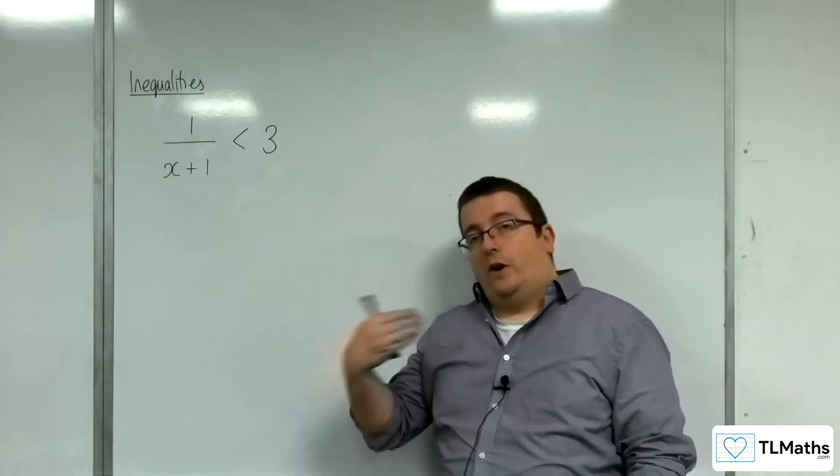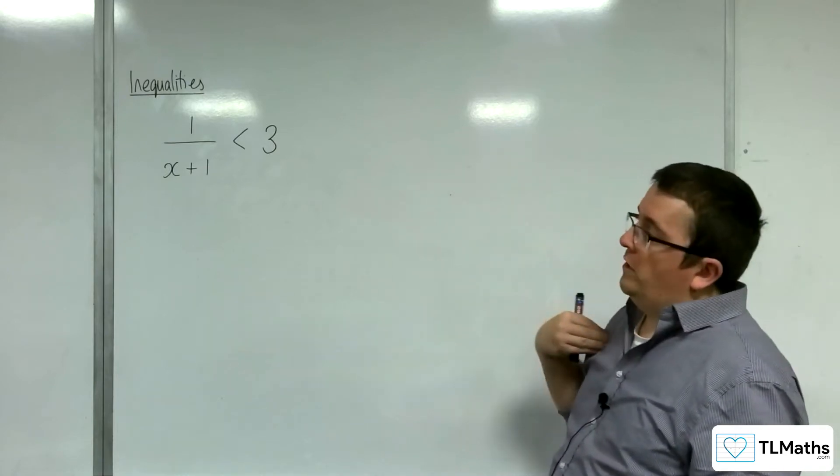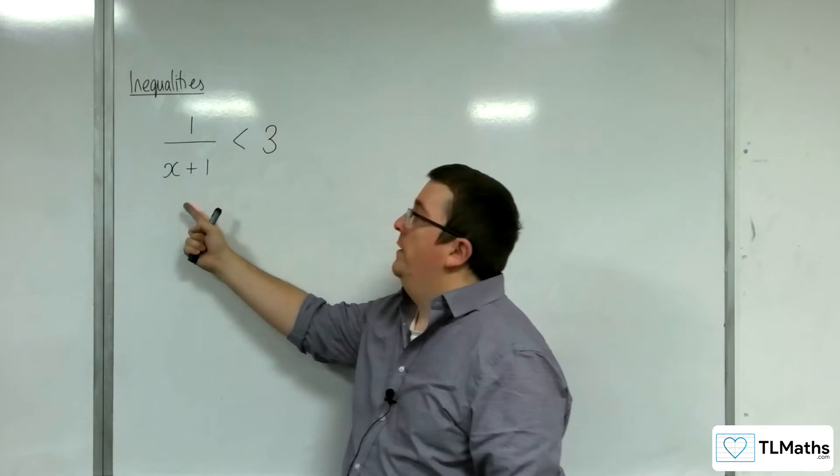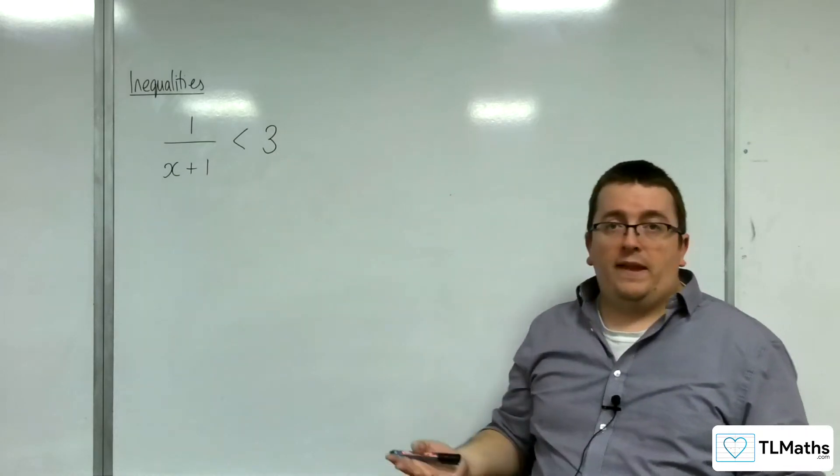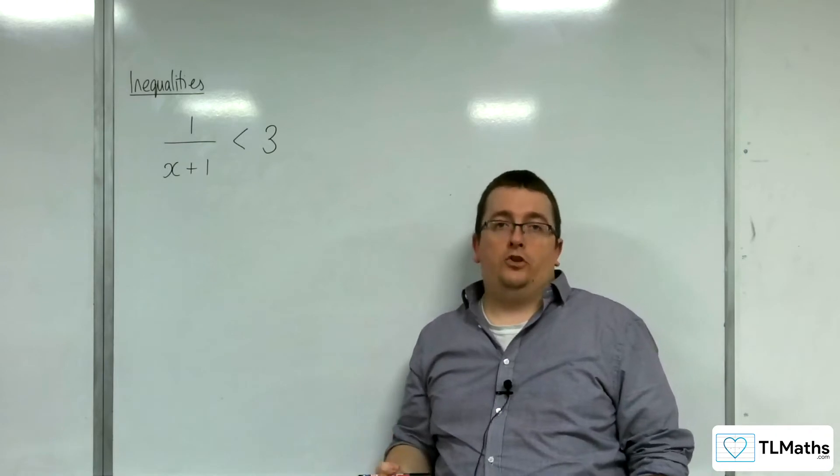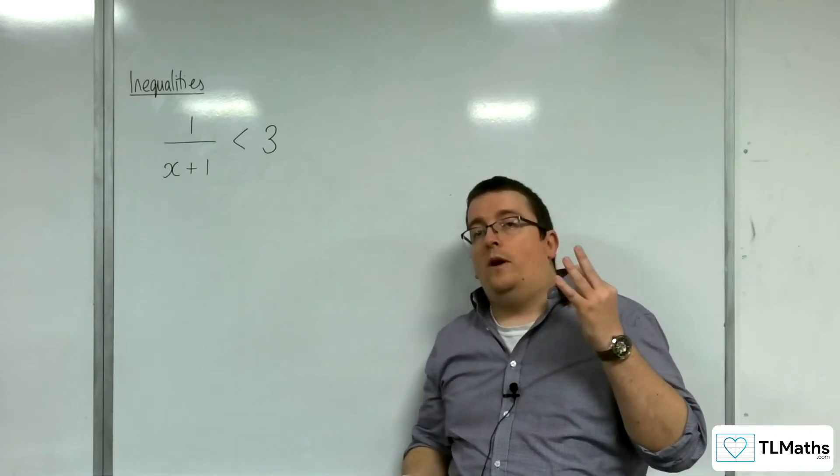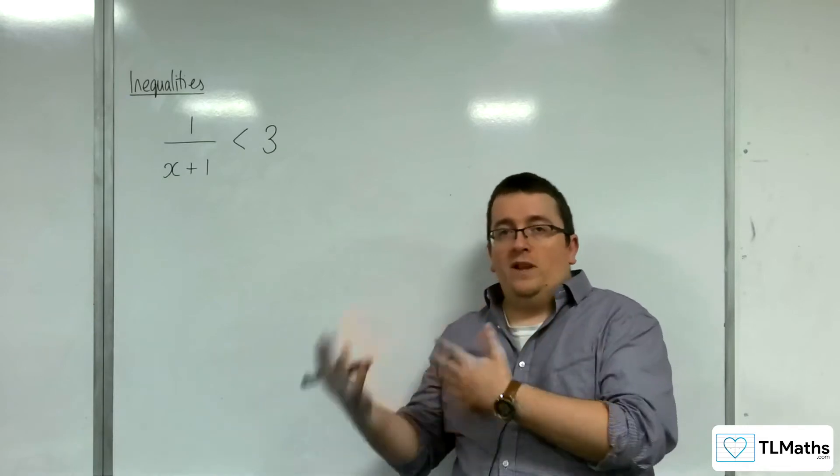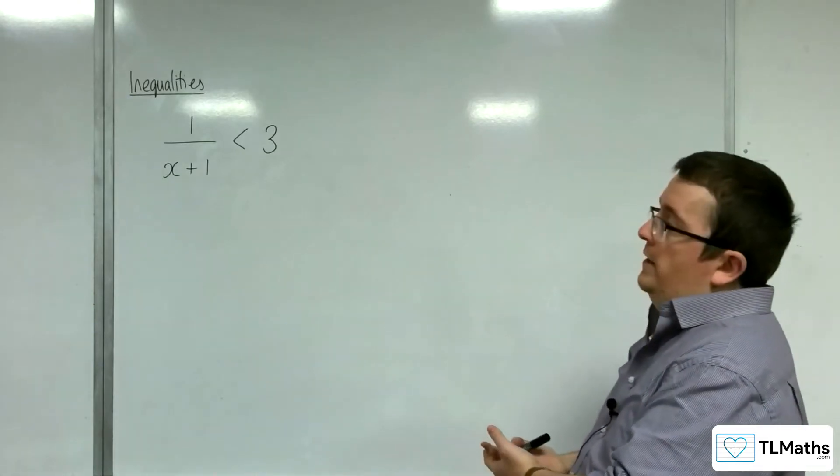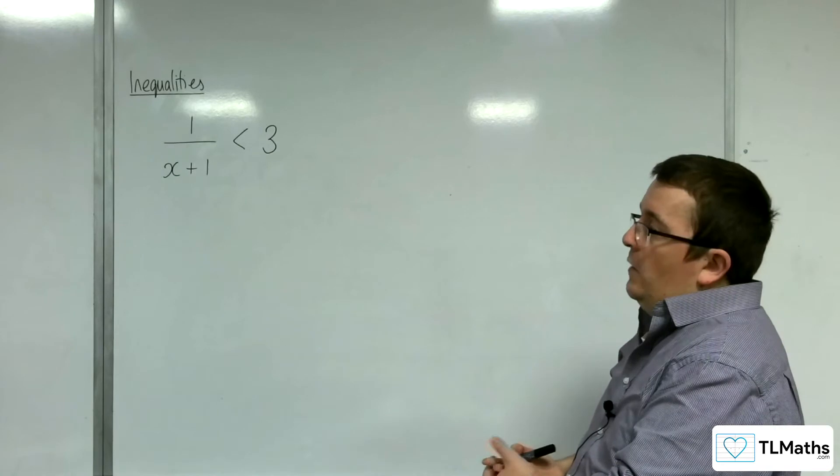Personally, if I was doing this, I would try and sketch 1 over x plus 1 and sketch y equals 3 and find where they intersected and then base my solution off that. I'm going to do that way first, and then I'm going to explain the wholly algebraic method and show you how that works.